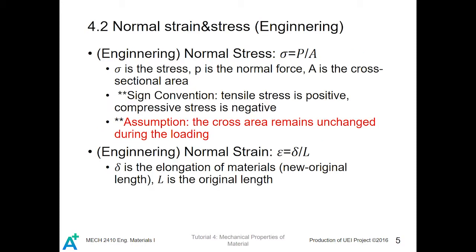Normal strain and stress. Engineering. In the engineering definition of normal stress, it is defined as sigma. Sigma stands for stress. P, P is the symbol for normal force. A is the cross-sectional area, which we assume that it doesn't change with respect to time. Sign convention: For tensile stress, it is positive. For compression stress or for compressive stress, it is negative.